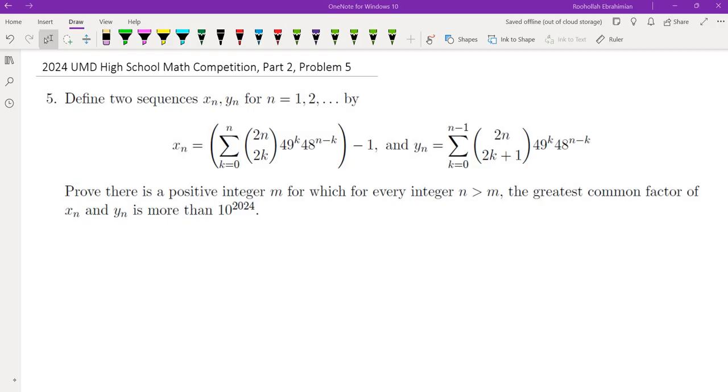The problem gives us two sequences and asks us to show that the GCD of xn and yn is more than 10 to the power of 2024 after some point. Essentially, the GCD of these two sequences can become very, very large after some point.